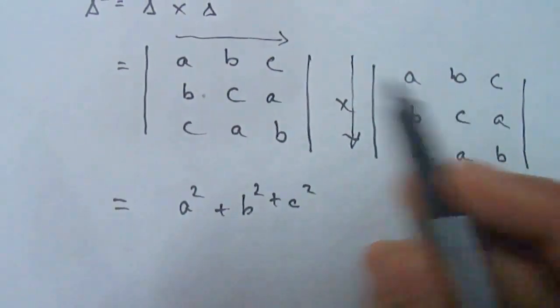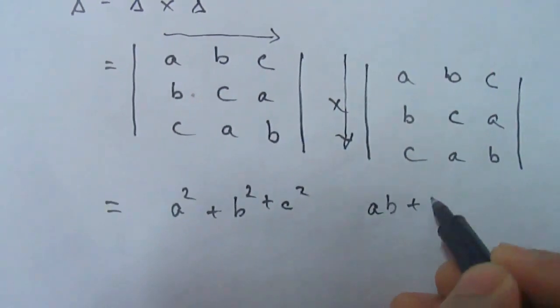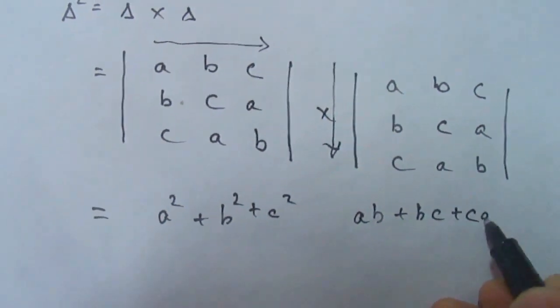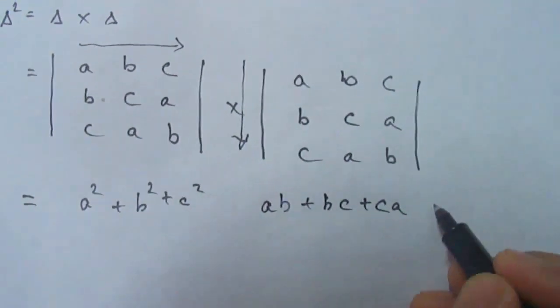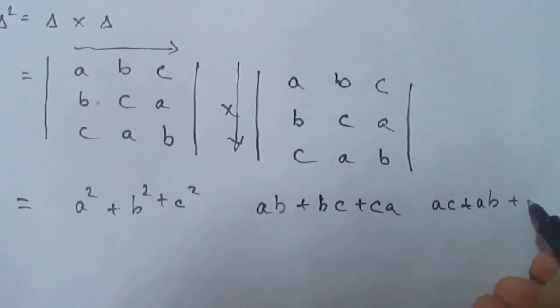Now we will do the same for a and b. It will be ab plus bc plus ca. For this, it will be ac plus ab plus cb.